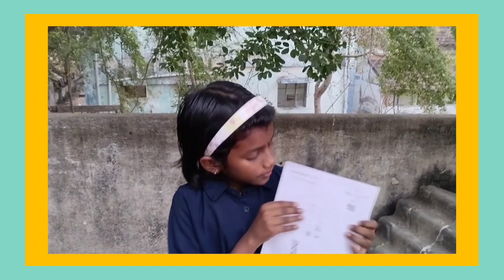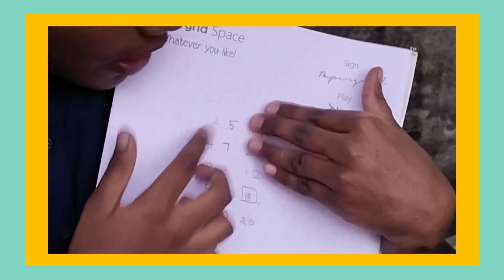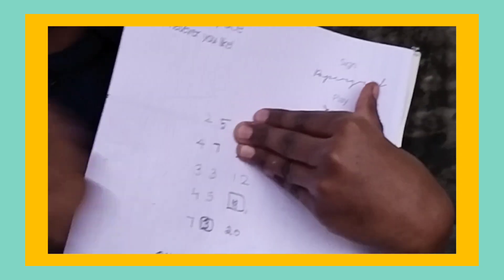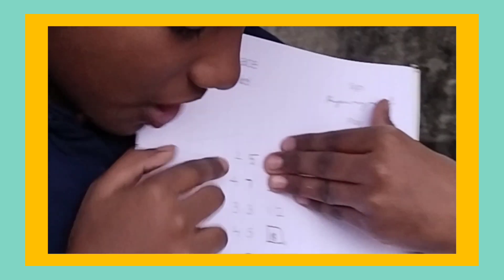You all know that after the tables. Now we are going to the sum. See, this is the sum 2 plus 5. What answer will come here? Shall I teach now?